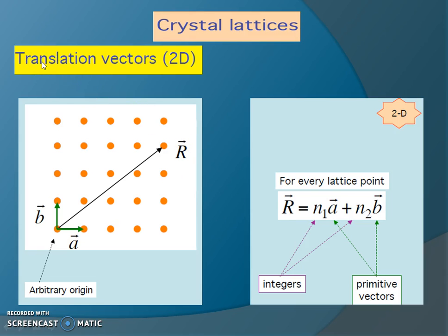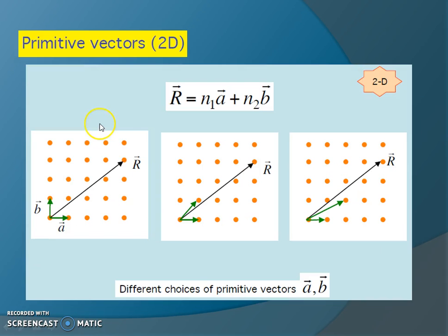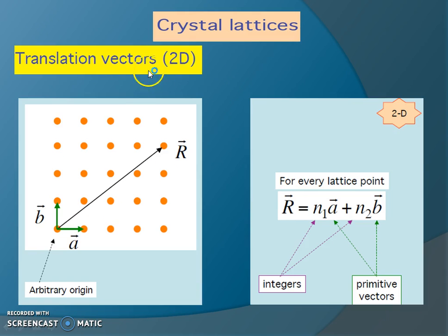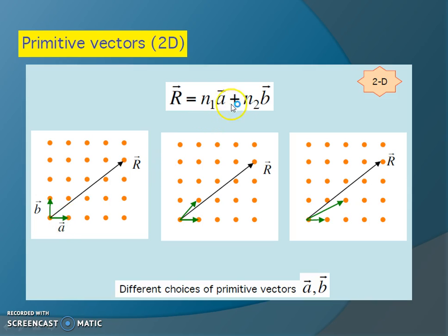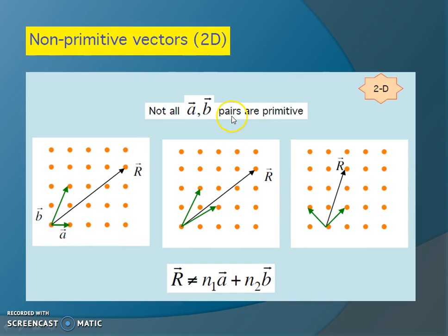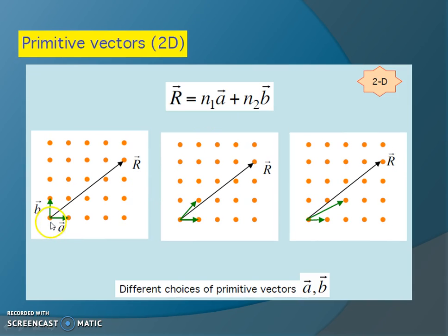An important quality of any solid material can be defined by the primitive translation vector. It can be given by parameters A and B in two dimensions, or A, B, and C in three dimensions. The resultant primitive vector R is given in terms of translational vectors A and B. A and B are distributed over two axes in a two-dimensional figure with integer values N1 (number of lattice points in the A direction) and N2 (number of lattice points in the B direction). The resultant of both is known as the primitive vector.